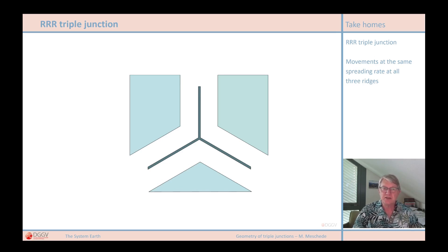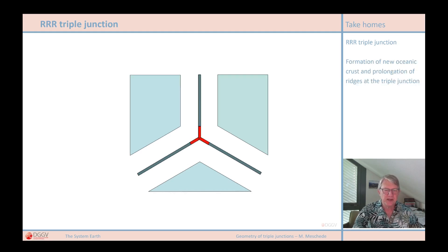The parts of the ridges highlighted here in red are now newly formed extensions of the ridges towards the triple junction.